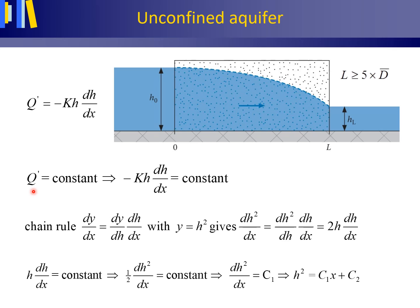Q' is constant, K is constant, so H dH/dx is constant. And we know this to be equal to ½ dH²/dx, as stated here. So this is constant, we can divide by the constant ½, and we obtain dH²/dx equals C1.